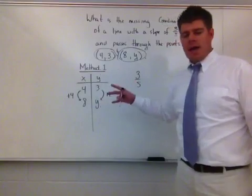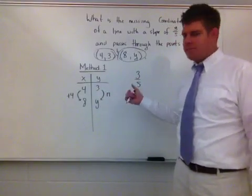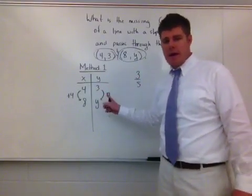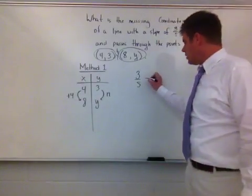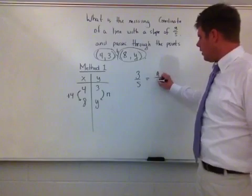since I know that the slope has to be 3 fifths here, then this ratio, then n divided by 4, has to be equivalent to that. So this has to be the same thing as n divided by 4.